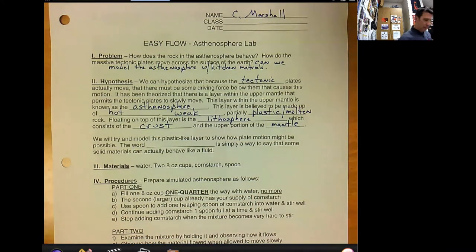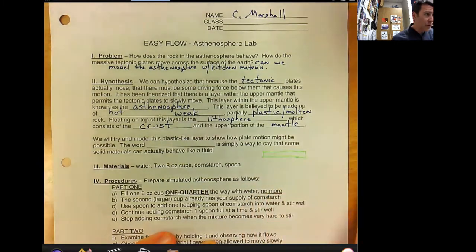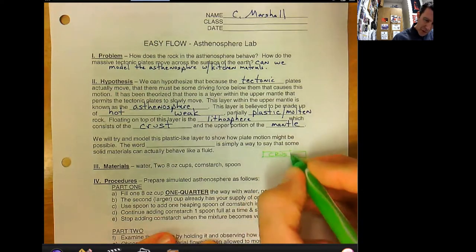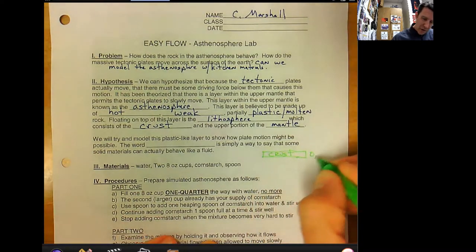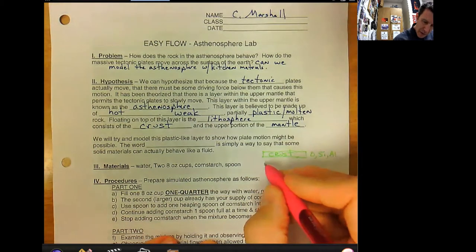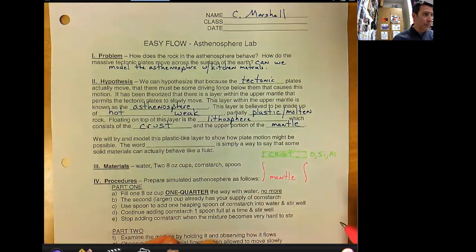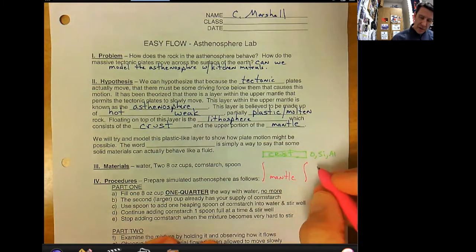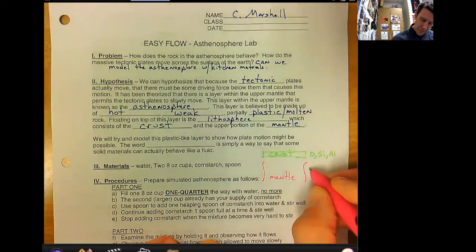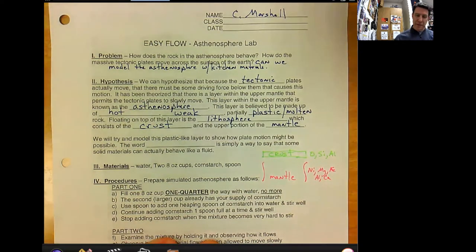There's an overlap. If this is the crust, which is made predominantly of oxygen and silicon and aluminum, and then the mantle is down below, it's actually the thickest layer made up of heavier elements: nickel, magnesium, some iron, aluminum, calcium, things like that.